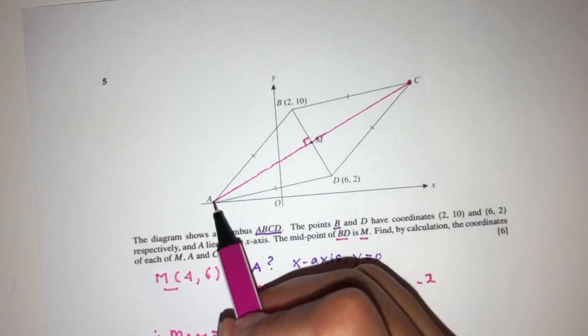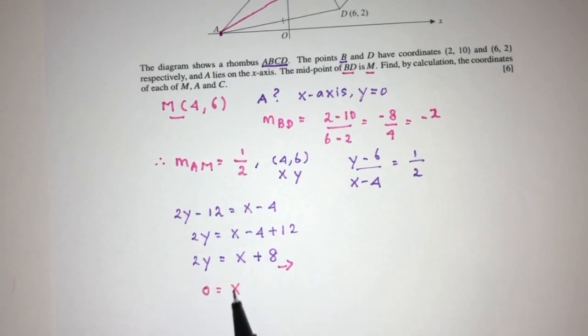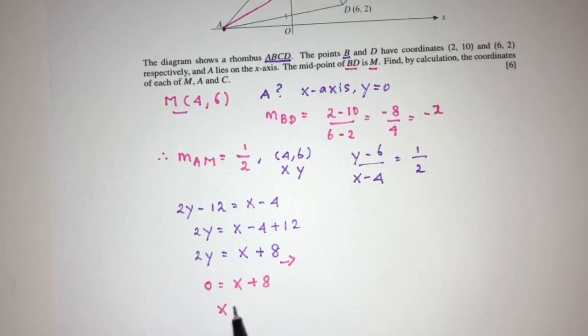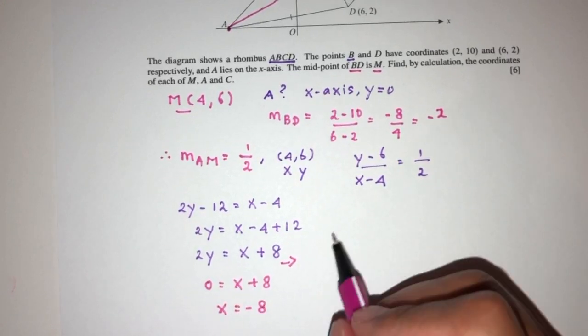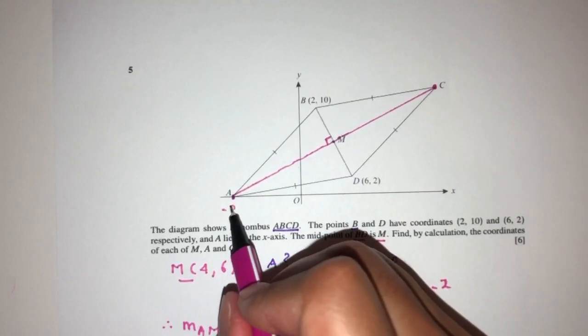Now we have to find this point of intersection. On the X-axis, the value of Y will be 0. That will be X plus 8. So X will be minus 8. So the point A will be minus 8 and 0. This is minus 8.